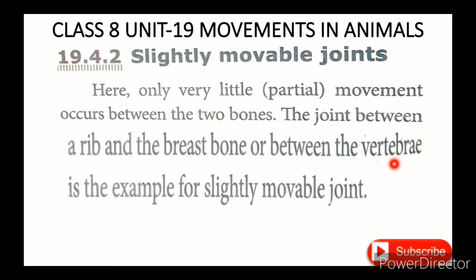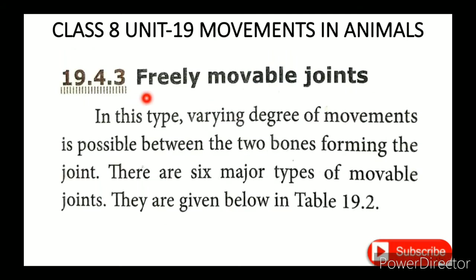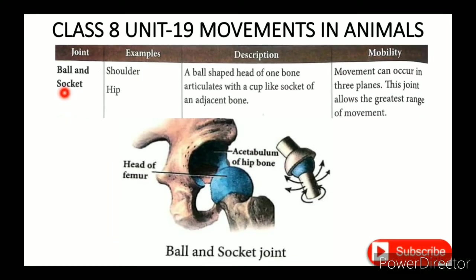The bones between the vertebrae are an example of slightly movable joints. The third type is freely movable joints. In this type, varying degrees of movement are possible between the two bones forming the joint. There are six major types of movable joints.